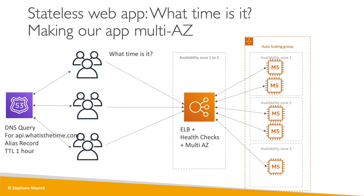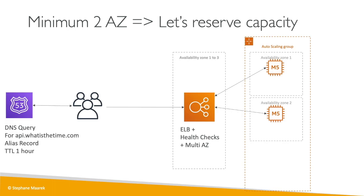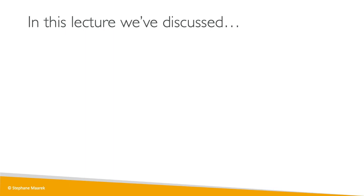How far can we go? We know at least one instance will be running in each AZ, so why not reserve capacity to reduce costs? We know two instances must be running at all times during the year. By reserving instances for the minimum capacity of our auto scaling group, we save a lot of cost. New instances that scale out dynamically can be on-demand, or even spot instances for less cost — though spot instances may be terminated.